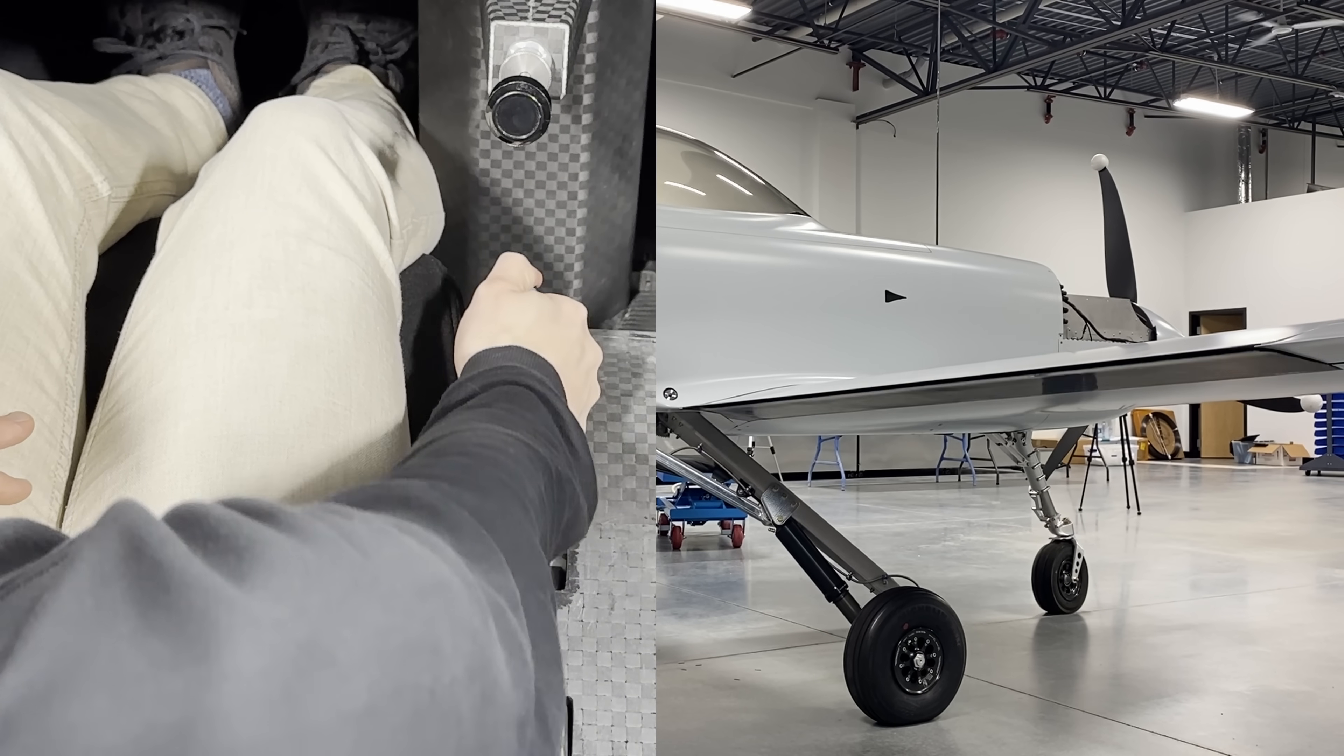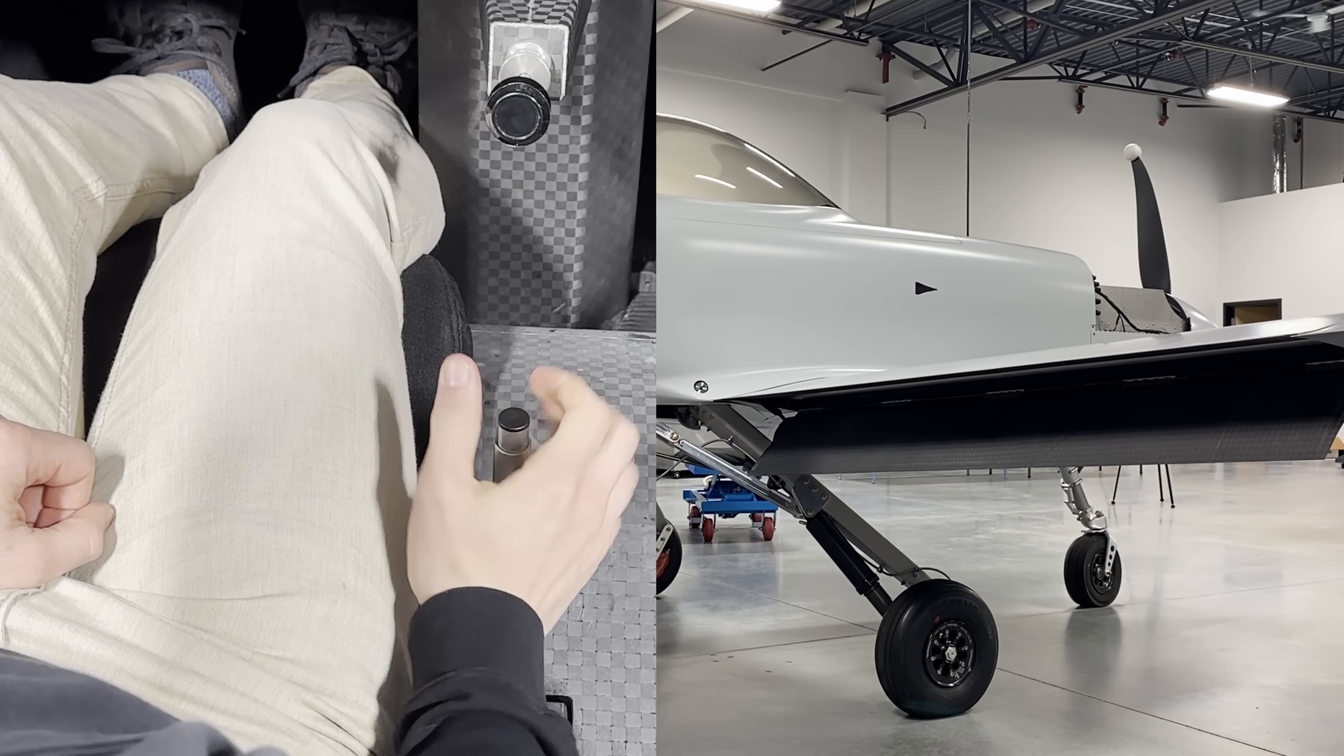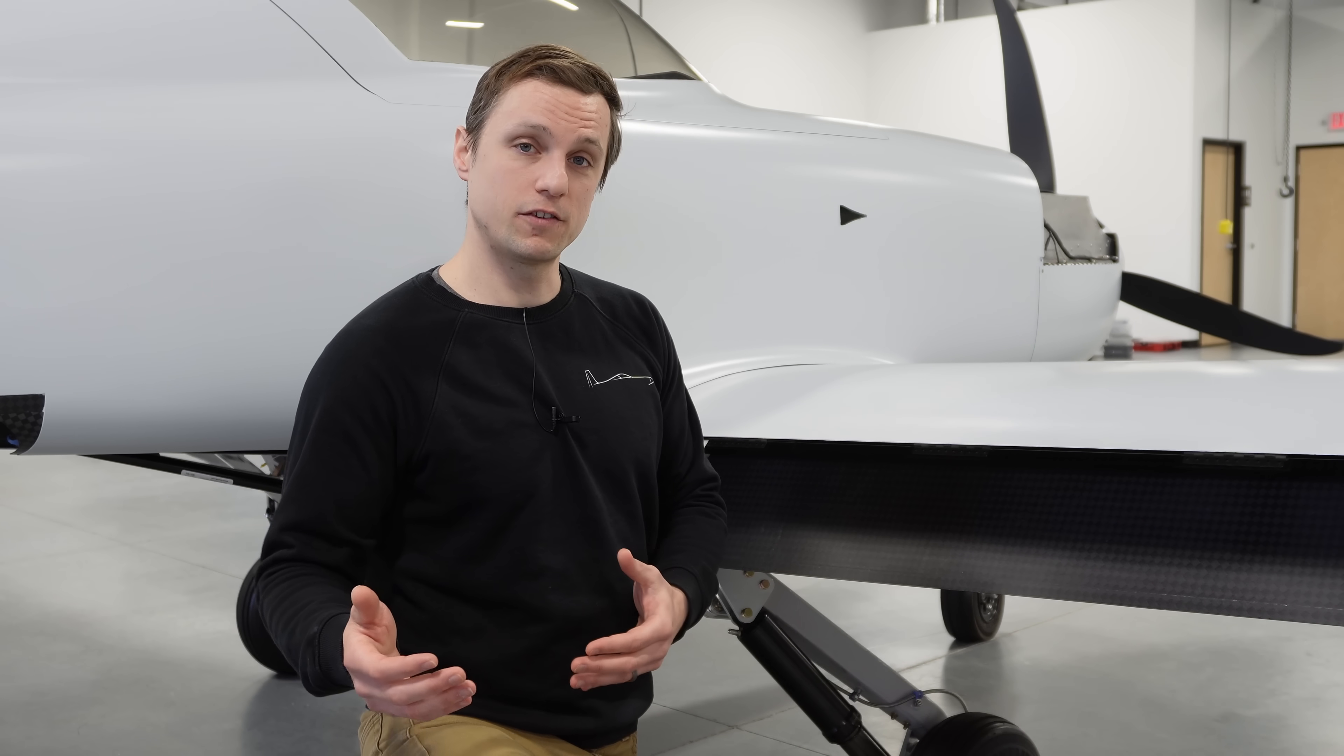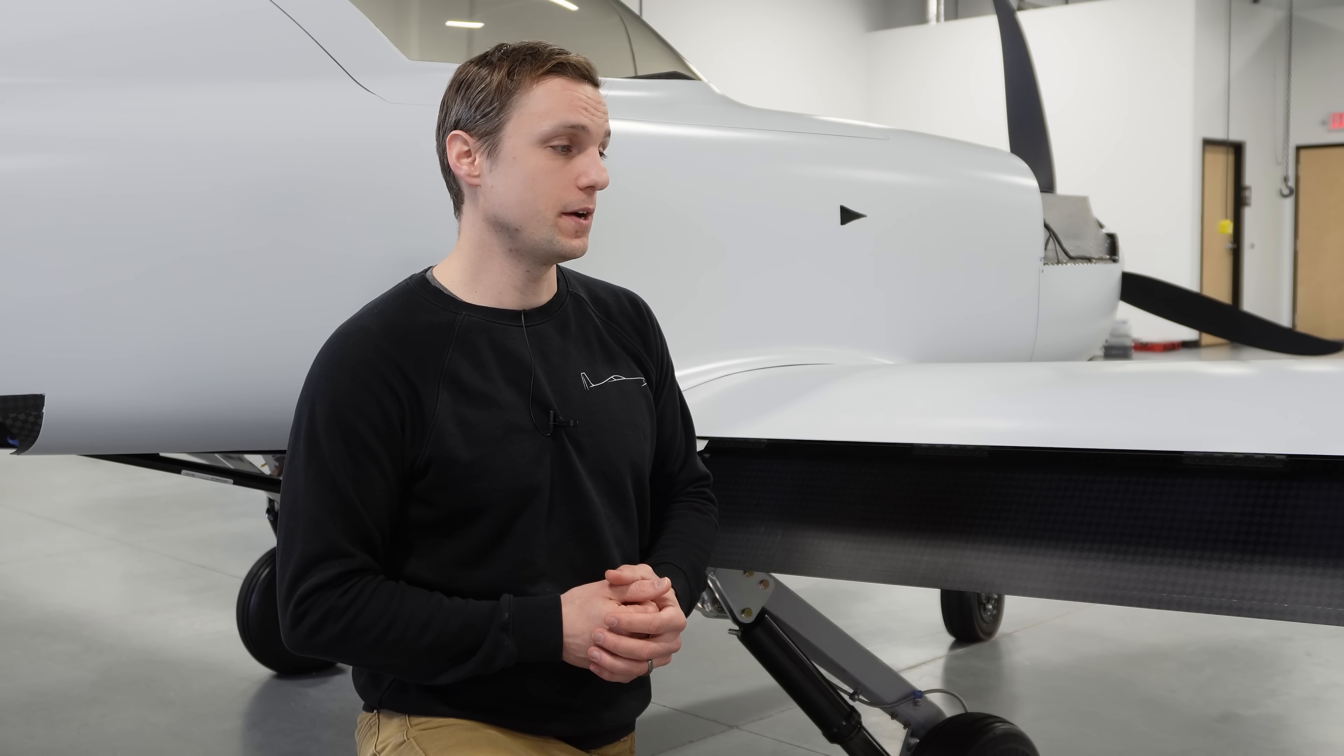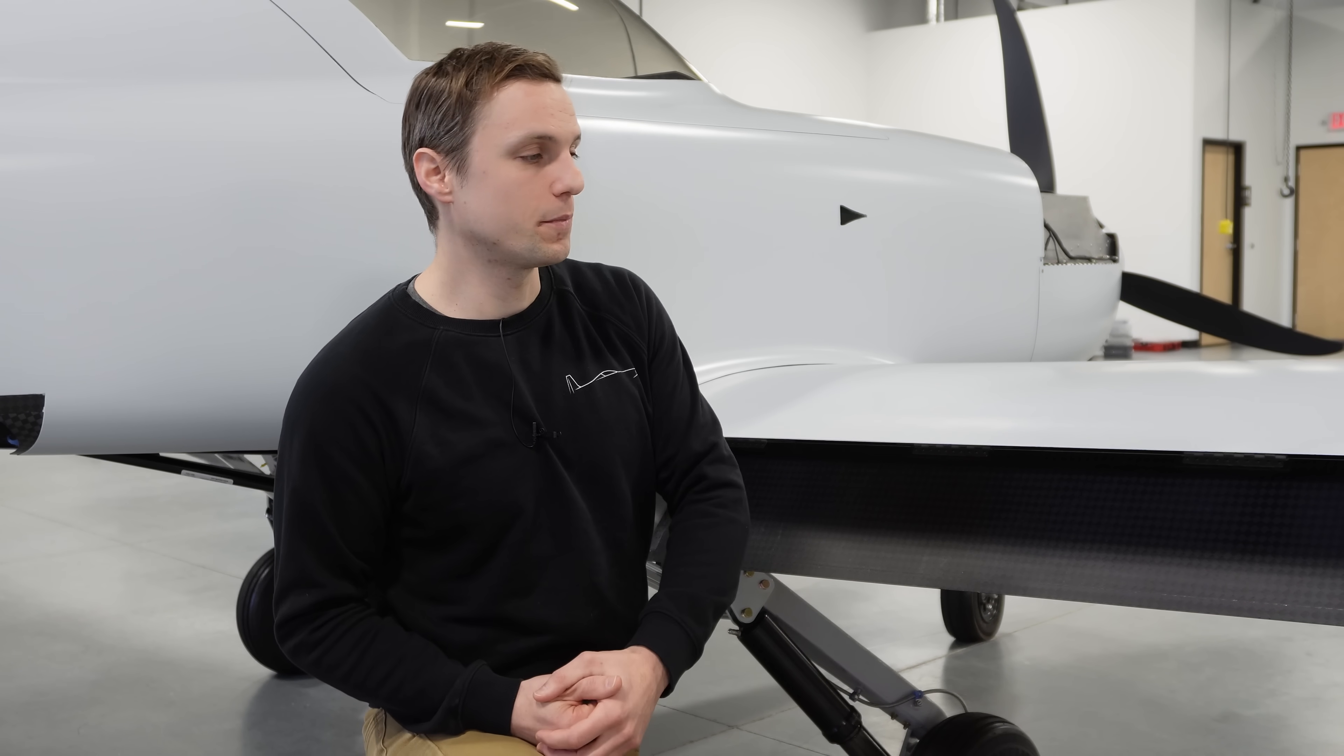So this is done with a manual flap handle that rests between the pilot and co-pilot. It's pulled up and down. We went back and forth on whether we do a manual flap or have it electrically driven, but we ended up deciding on a manual flap actuation just due to its simplicity, lightweight, and the ability to quickly implement it for the prototype.